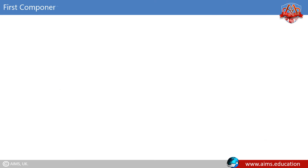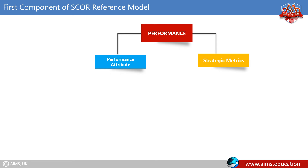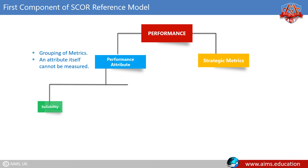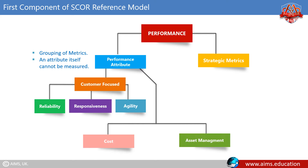The first component of the SCOR reference model is Performance, which consists of two types of elements: performance attributes and strategic metrics. A performance attribute is a grouping of metrics used to express a strategy — it cannot itself be measured but is used to set strategic direction. Reliability, responsiveness, and agility are considered customer-focused, while cost and asset management efficiency are considered internal-focused.